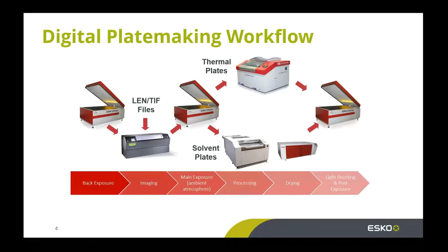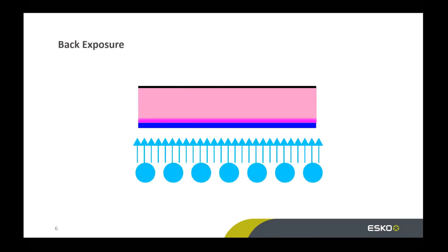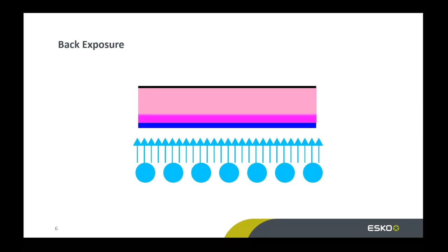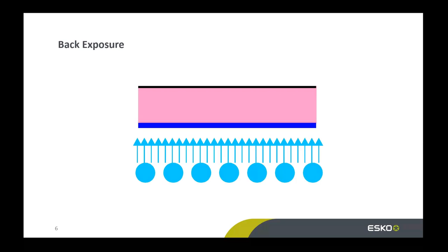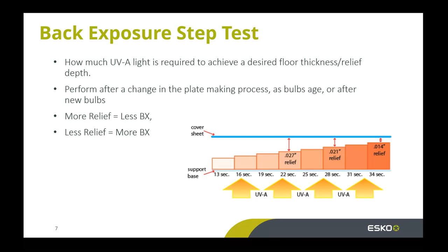The first step we want to define is the back exposure step. Back exposure is created using a UV lamp at basically 365 nanometers. As we turn that lamp on, the cross-linking of the polymers, monomers, and photo initiators all get activated. That forms from where the light first touches it to somewhere in the middle of the plate - there's a zone in the middle where some cross-linking happens and some doesn't. How do we control back exposure? How do we know what floor we need? The first thing to do is a back exposure test - how much UV light determines what that floor thickness is.